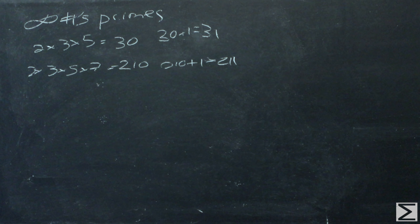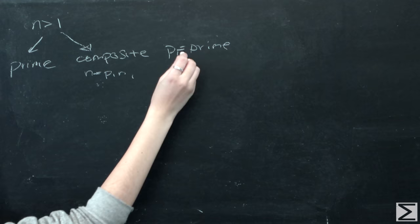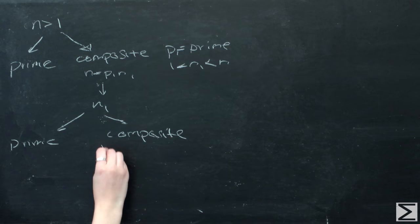Euclid was the first to prove what would become known as the fundamental theorem of arithmetic or the unique factorization theorem. This is also the first known proof to use proof by contradiction. His theorem states that every positive integer n is either a prime or can be expressed as the product of primes. This representation is unique apart from the order in which the factors occur.